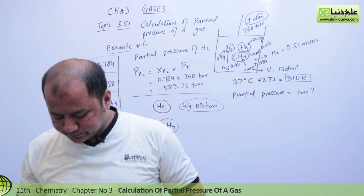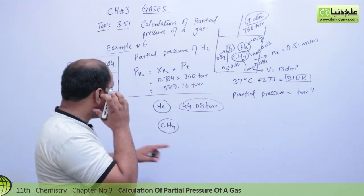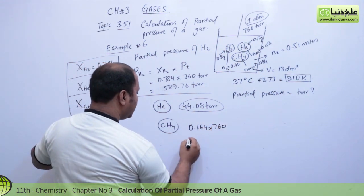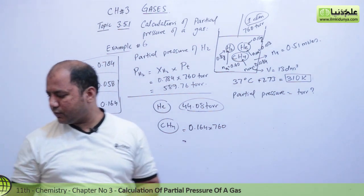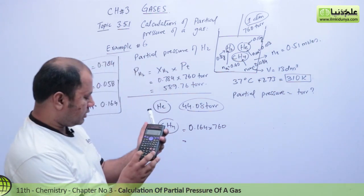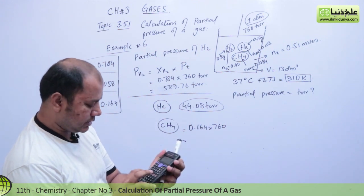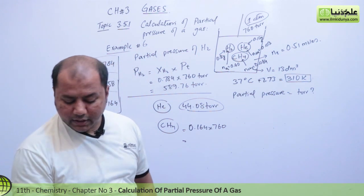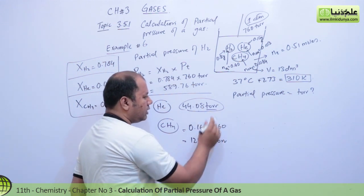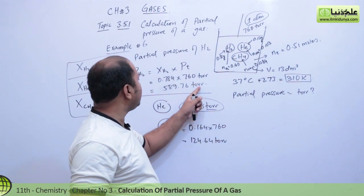And for methane: PP(CH₄) = X(CH₄) × P_total = 0.164 × 760 = 124.64 torr. Note that 1 torr = 1 mmHg, so you can also express the unit as millimeters of mercury — it's not a big difference. So the partial pressures are: H₂ = 589.76 torr, He = 44.08 torr, CH₄ = 124.64 torr.